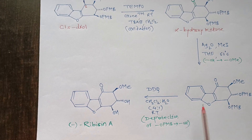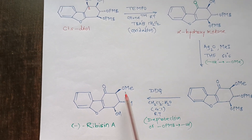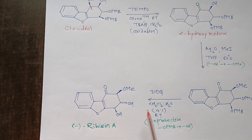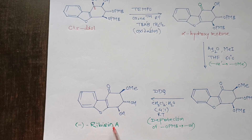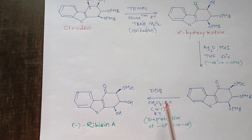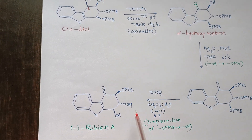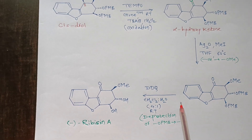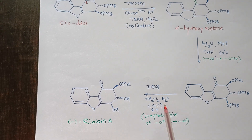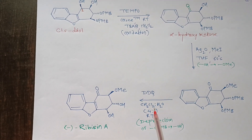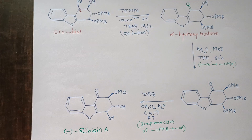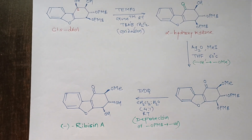Deprotection of the PMB group into the corresponding OH group was done by DDQ to afford the Rubicin A molecule. DDQ is a reagent used for the deprotection of OPMB into the corresponding OH. DDQ means 2,3-dichloro-5,6-dicyano-1,4-benzoquinone. This completes the synthesis of Rubicin A designed by Dr. Boyd and co-workers. Thank you.